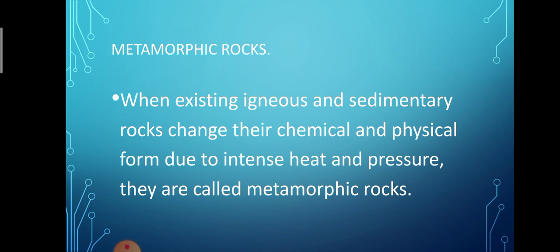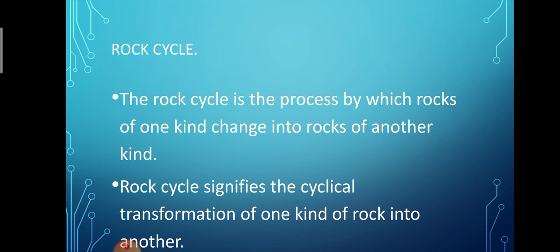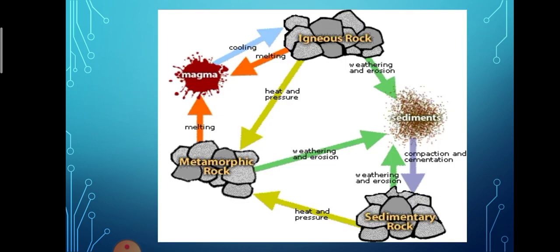Our next topic is rock cycle. The rock cycle is the process by which rocks of one kind change into rocks of another kind, signifying the cyclical transformation of one kind of rock into another. Due to heating, melting, erosion, deposition, and chemical action, one group of rocks leads to the formation of another group. The formation and development of rocks in this way is a cyclical process known as the rock cycle.